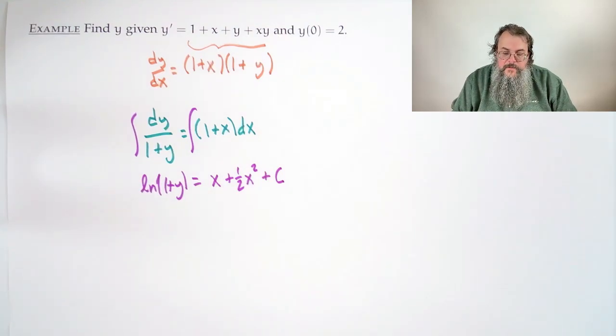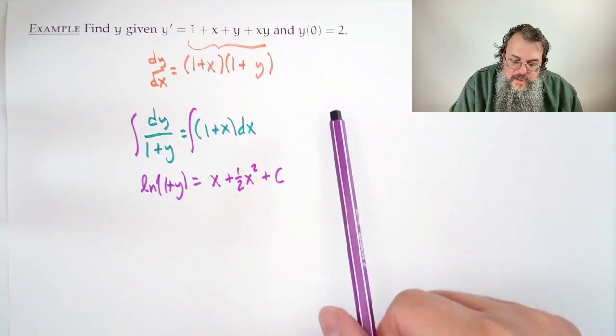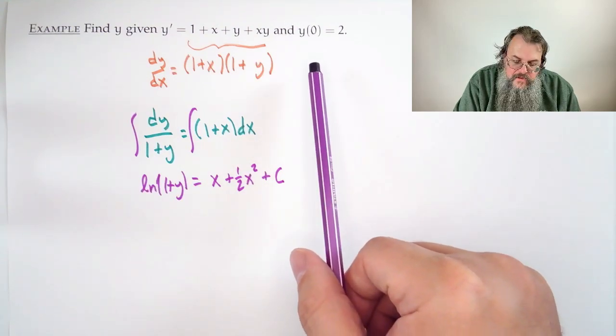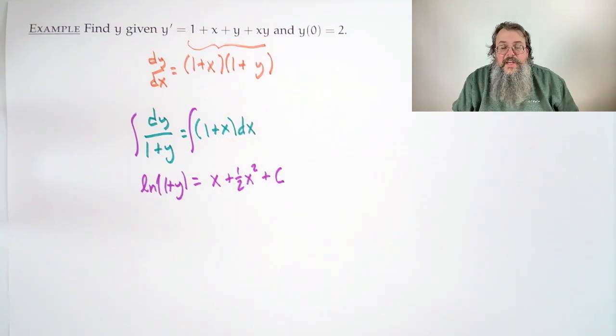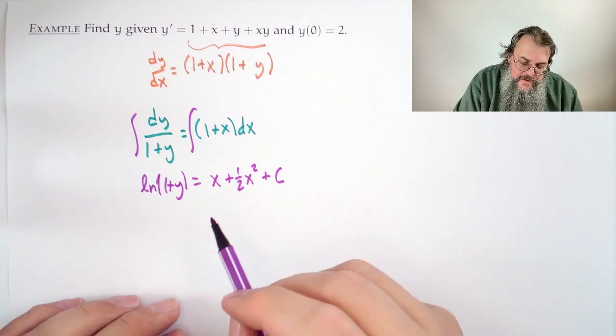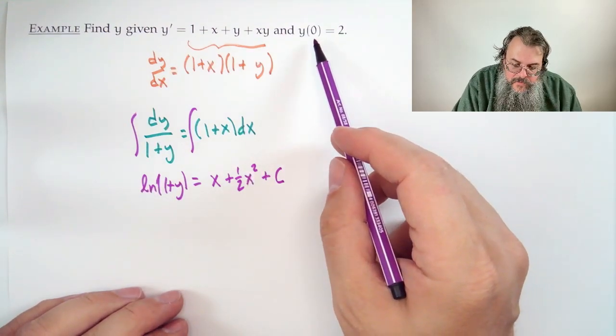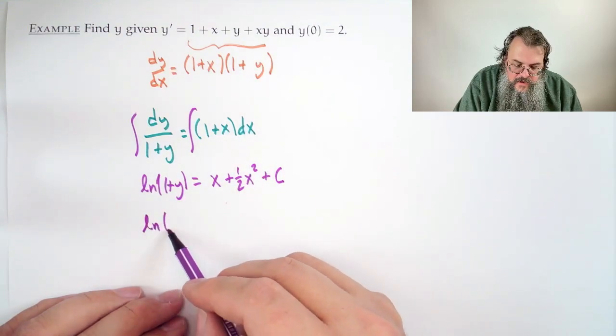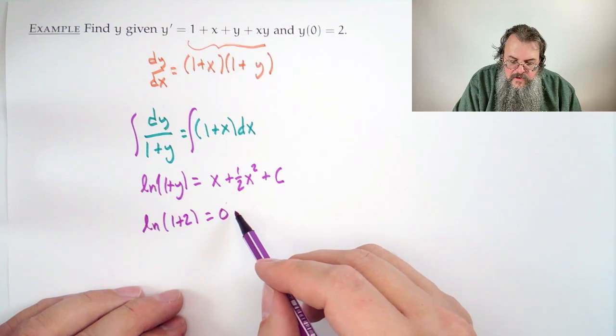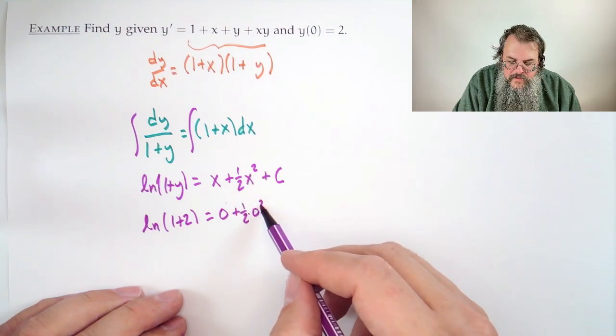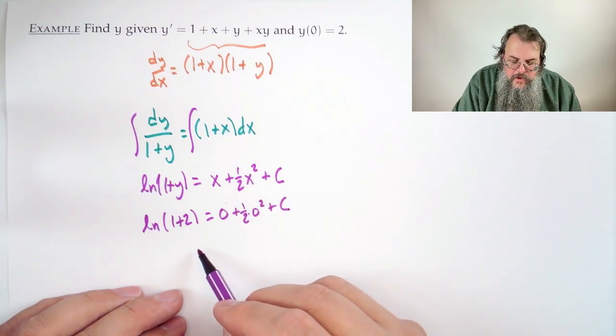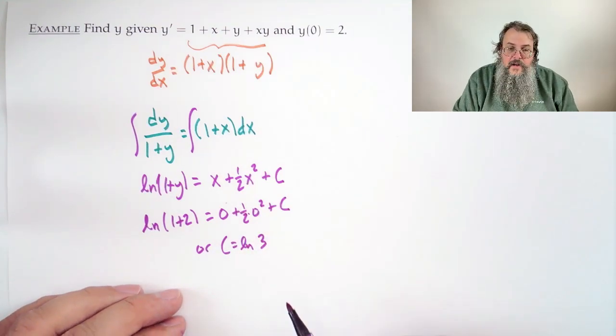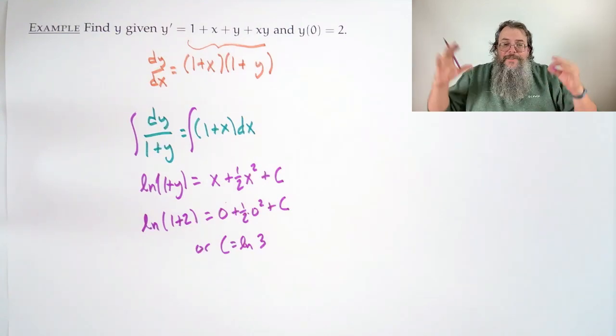Now what do we have? We have y of 0 equals 2. Now we can just sort of eyeball. Does it make sense to plug it in now? Well, we can. Why not? And let's see what we have. So that says anytime when x is 0, y is 2. So log of (1 plus 2) is equal to 0 plus 1/2 times 0 squared plus c, or c is natural log of 3. Okay, great. We've done it. We've solved for c. But we really want y.